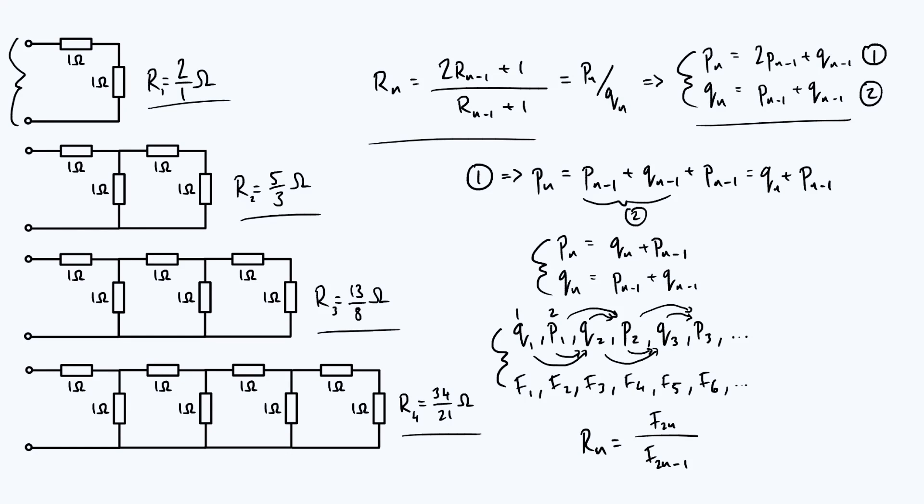If you wanted to take that even further, you could use the expression for the nth term of the Fibonacci sequence, plug that into the top and the bottom, making sure that you put N as 2n on the top and N as 2n minus 1 on the bottom, and come up with an nth term for the resistance.